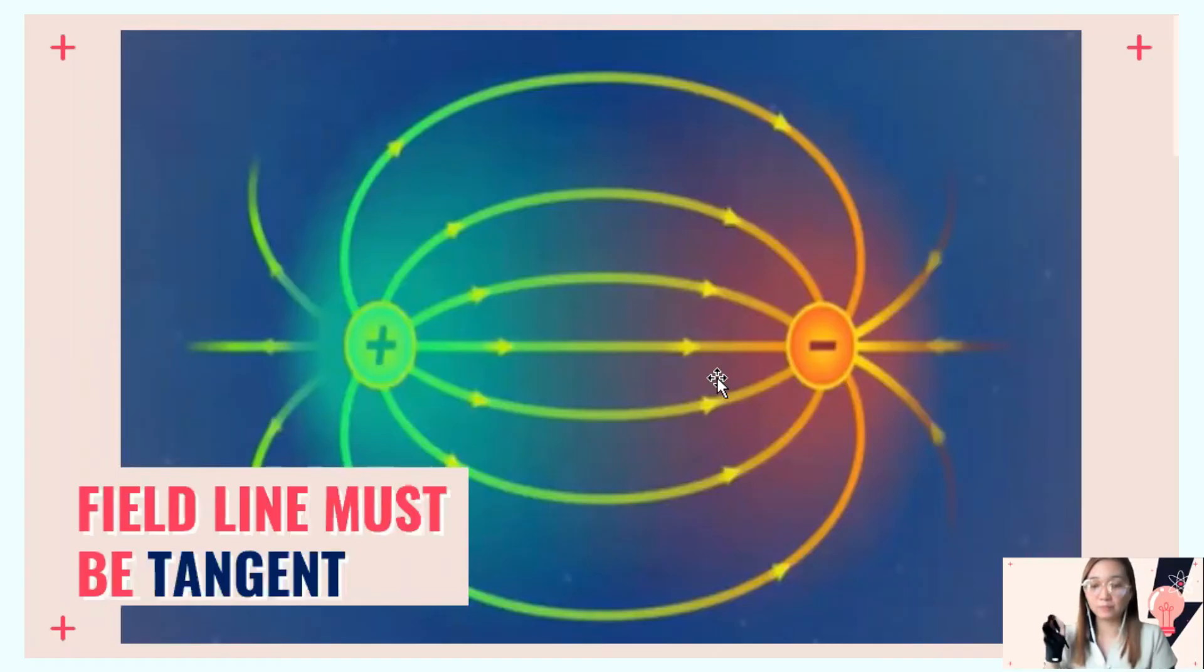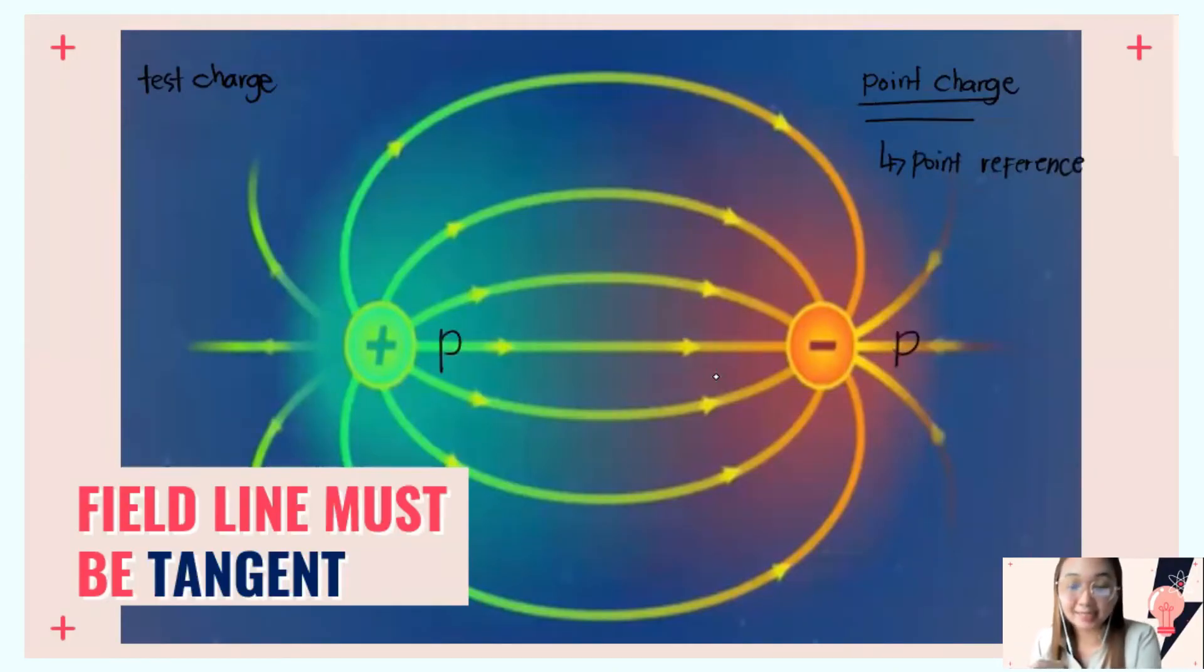The first rule: field lines must be tangent. We need to remember test charge and point charge. What's the difference? Point charge is like a point of reference—it's the charge actually present in an atom. For example, these two charges, positive and negative, are considered point charges.